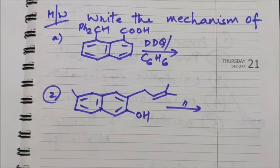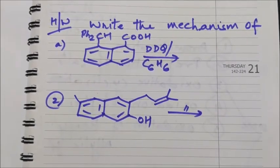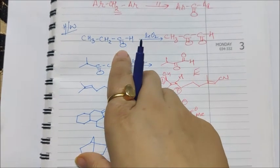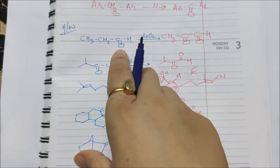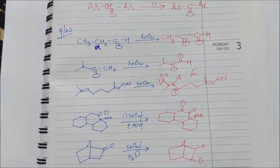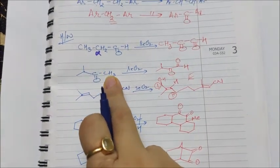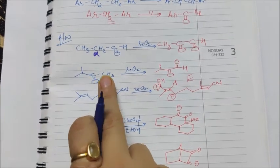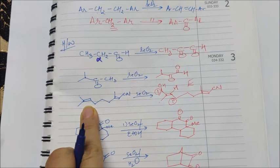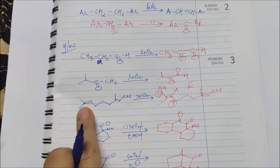Now that we have covered all applications of DDQ, let's review the homework on selenium dioxide. For the first question: if a carbonyl compound is present, the alpha carbon is oxidized to a carbonyl, forming a dicarbonyl compound. In the second case, a carbonyl compound has both a CH3 and a CH group; since CH3 is more easily oxidized, that gives the product. In the third case with two alkenes, the more electron-rich alkene gets oxidized.